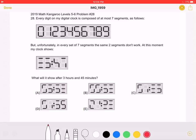This is the 2019 Math Kangaroo Levels 5-6 Problem Number 28. Every digit on my digital clock is composed of at most seven segments as follows.